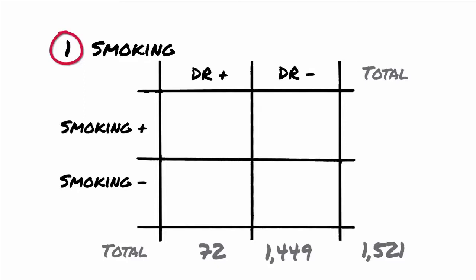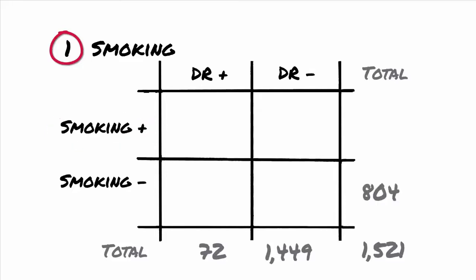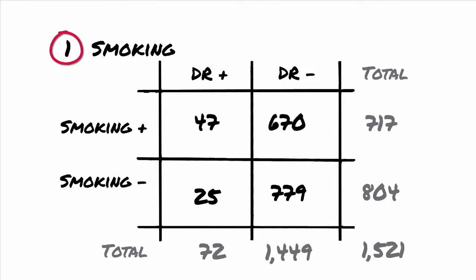First, let's look at the relative risk of developing DR if you're a smoker. 804 of the 1,521 participants had never smoked, and 25 of these developed DR over the study period — 779 did not. 717 participants were smokers; 47 of these developed DR and 670 did not.